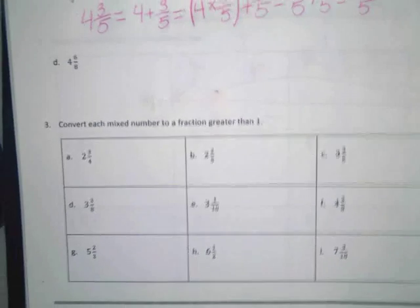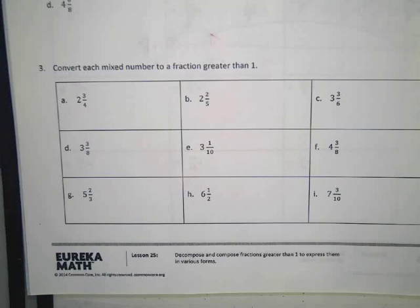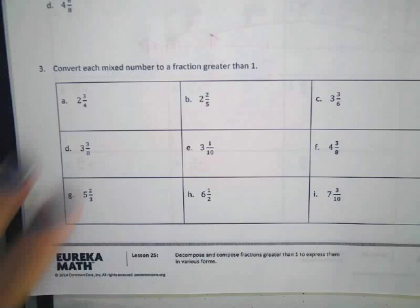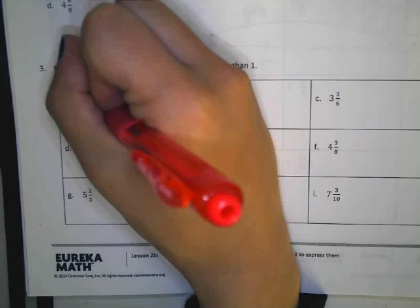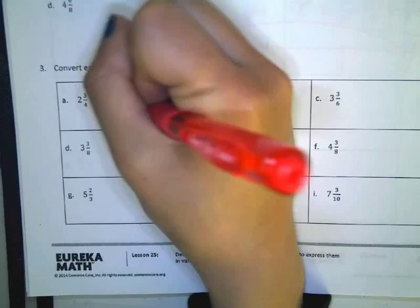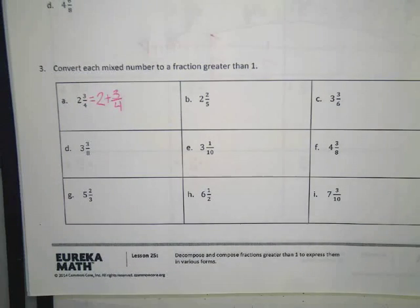At the bottom here, same idea, just in little boxes. Convert each mixed number to a fraction greater than one. So for this you can really do it any way you wanted. I'm going to show you the way that I like to do it. So my first one is two and three fourths. I like when they do that this is equal to two plus three fourths. Because like I always tell you guys, I like to start with what they give me. I don't like to make it harder than it has to be.